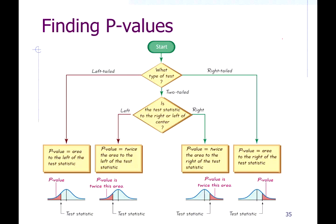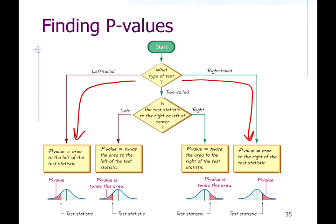The p-value is an area. For a one-tailed test — left or right — the p-value is the area outside of the test statistic. For a two-tailed test, the p-value is twice that area outside the test statistic. So: if it's a one-tailed test, use the area; if it's a two-tailed test, double the area.